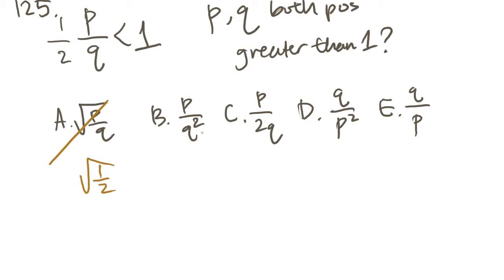B, P over Q squared, that's going to be 1 over 4, smaller than 1. P over 2Q, same thing, 1 over 4. Q over P squared is going to be 2 over 1 squared. That is larger than 1, so maybe it's going to be D. E is Q over P, which is 2 over 1. So it could be either D or E.